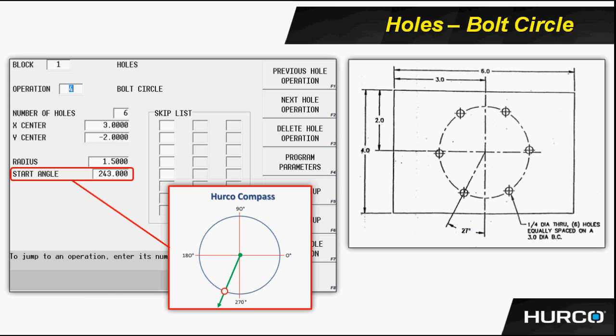In this particular case, we are 27 degrees shy of the 270 degree mark. So we could enter 270 minus 27, and that would give us the starting angle for this particular set of holes of 243 degrees. And that is also the location of where the first hole will be drilled, and that's going to become important later on.